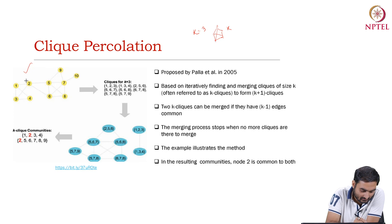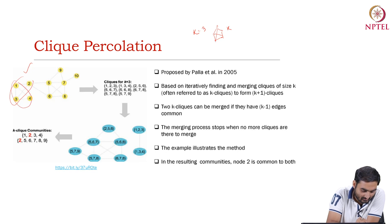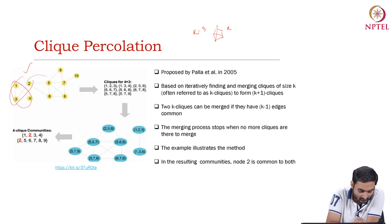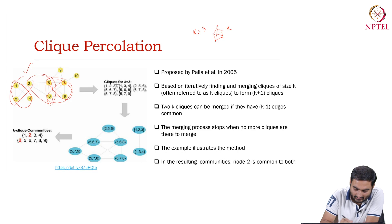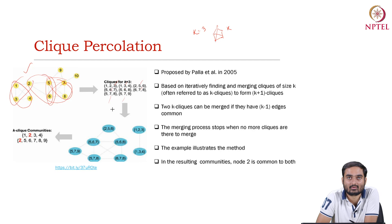Let us assume that k equals 3, so we are interested to detect cliques of size 3. In this graph, this can be a clique of size 3, this can also be a clique of size 3. So for example: {1,2,3}, {1,3,4}, and so on — there are 8 cliques of size 3 in total.